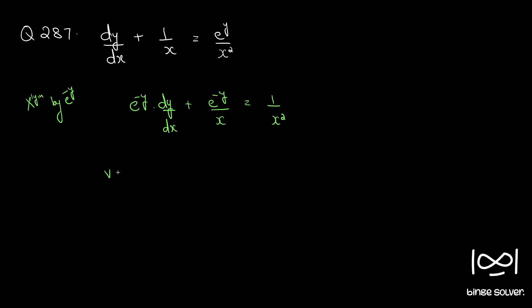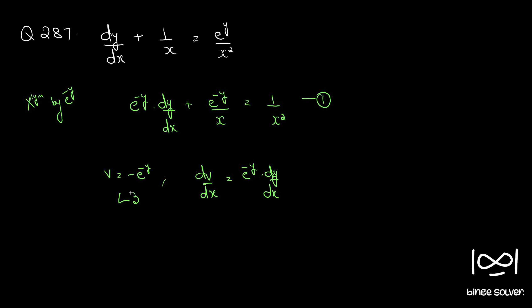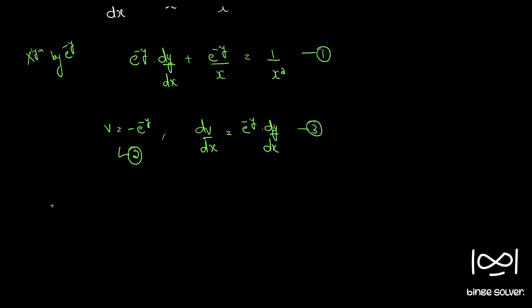Now if we put v equal to minus e raised to minus y, we have dv/dx is equal to e raised to minus y into dy/dx. We'll call this equation 1, equation 2, and equation 3.